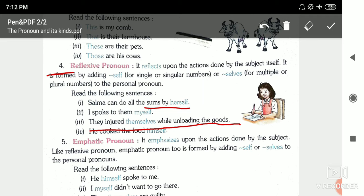For example, Salma can do all the sums by herself. I spoke to them myself. They injured themselves while unloading the goods. He cooked the food himself. So 'himself' is reflexive pronoun here.